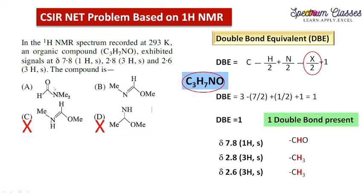Now we are left with A and B. This chemical shift value of δ 7.8 suggests that a CHO group is present. In option A we have a CHO aldehyde group, and in option B we have a double bond H which is nearby to an oxygen atom.